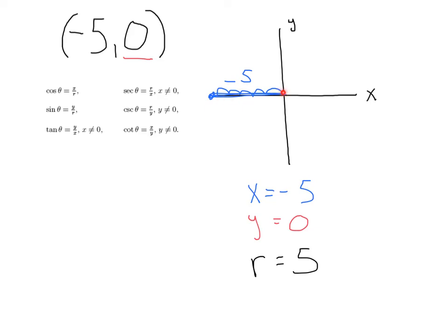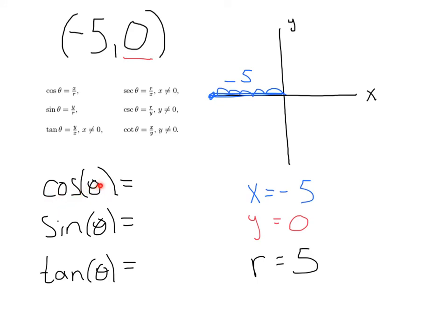You might be asking how to draw a triangle if you've just got a straight line. You can't, because a triangle needs at least three points and we've only got two here. This is where the x, y, r system helps out. Cosine theta equals x over r: that's negative 5 over 5, giving us negative 1. Sine theta equals y over r: that's 0 over 5, which equals 0. Tangent theta equals y over x: that's 0 over negative 5, which is also 0.